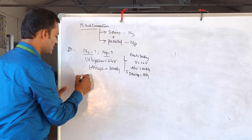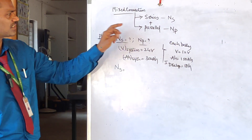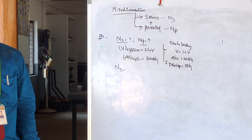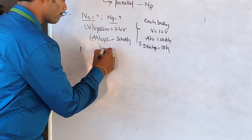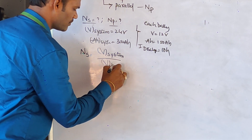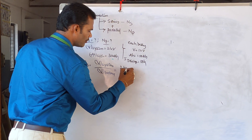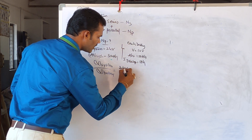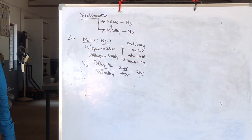First, let's calculate the number of batteries to be connected in series connection. The formula is: number of batteries in series equals system voltage divided by individual battery voltage. System voltage is 24 volts divided by individual battery voltage of 12 volts. Therefore, 24 divided by 12 gives us 2 batteries to be connected in series connection.